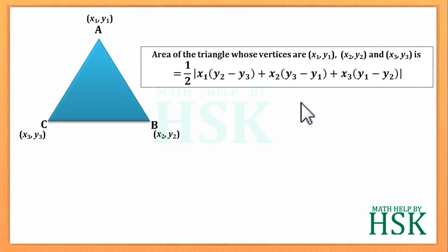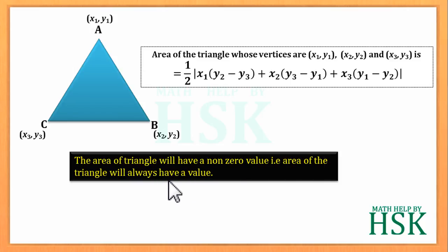If we consider any triangle ABC, as shown, and we calculate the area of the triangle, then it will have a non-zero value. In other words, we can say that area of triangle will have some value. Another point we can consider is this: for the triangle ABC, the points A, B, and C are non-collinear, that is the points do not lie on the same line.